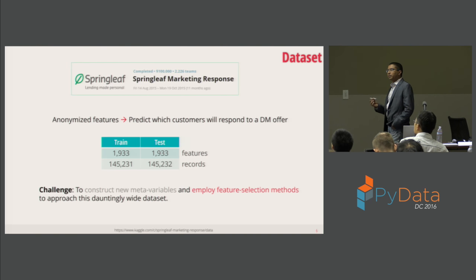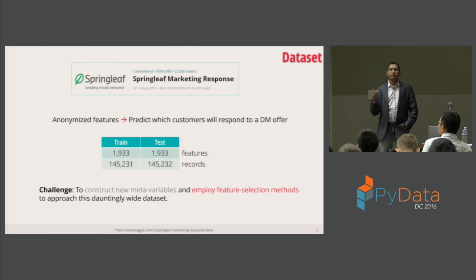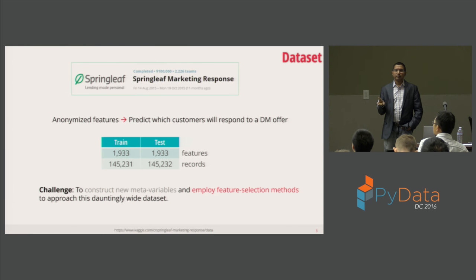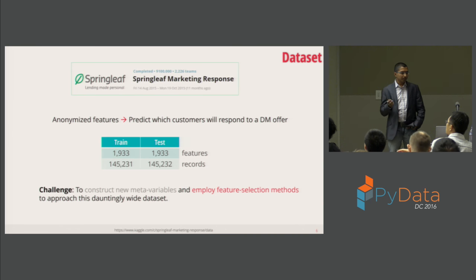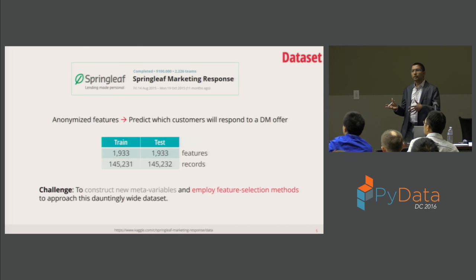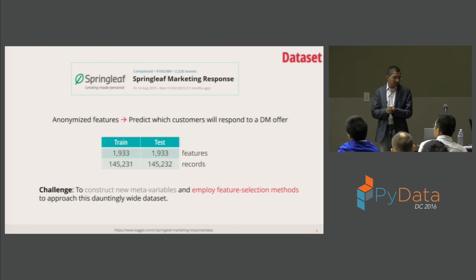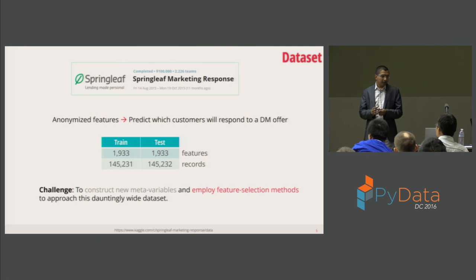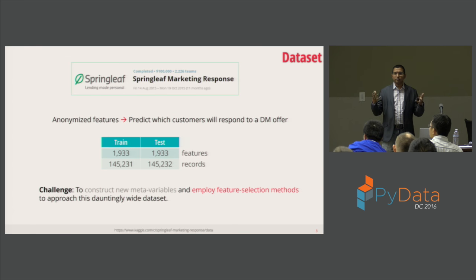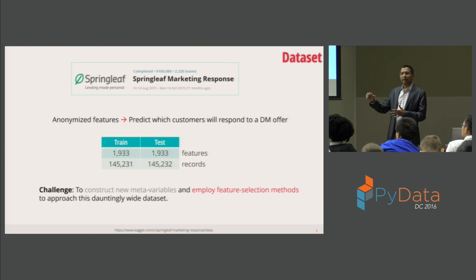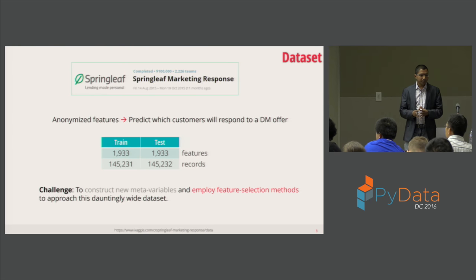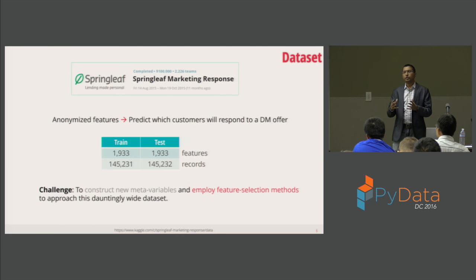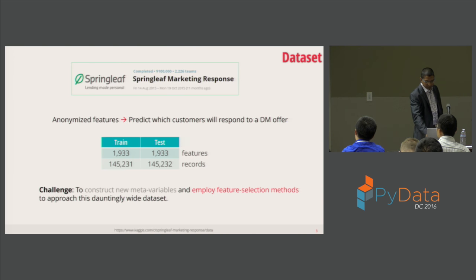The data I'm using for this talk comes from a Kaggle challenge — the Springleaf dataset — with 1,933 variables and 145,000 records. The goal was to use those features to predict which customers are likely to respond to a marketing offer. The challenge was two-fold: create new features from the existing 1,933 variables, and employ feature selection methods to identify the best model. I've done the feature creation already, which is a separate talk. What we'll focus on is feature selection.